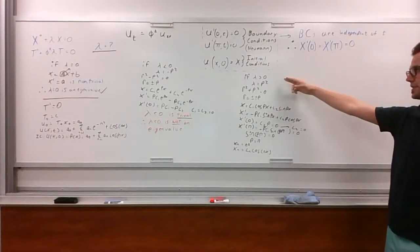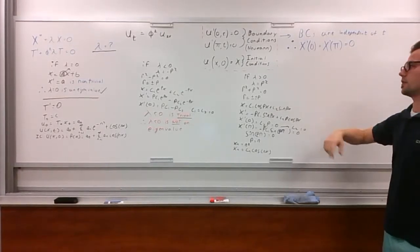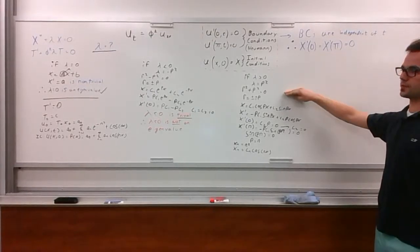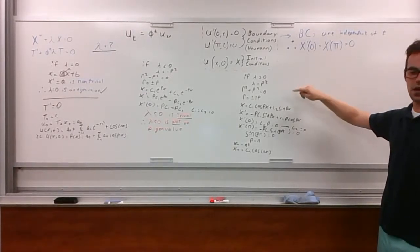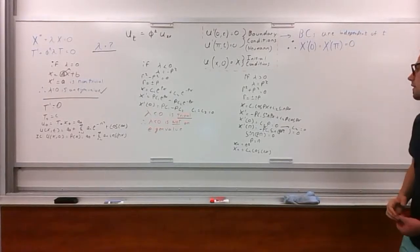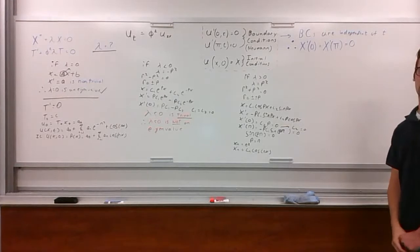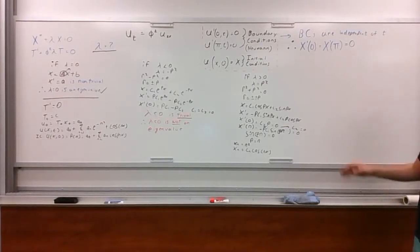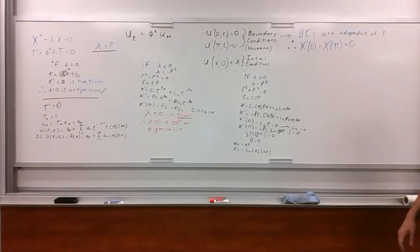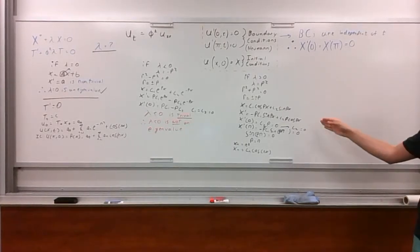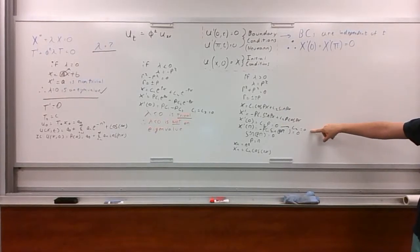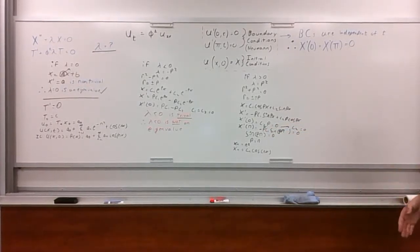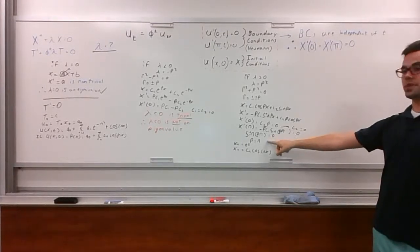Moving on to the third equation, we evaluate whether or not lambda is greater than 0. Making the substitution that lambda equals p squared, we get the characteristic equation r squared plus p squared equals 0. Solving for r, we get r equals plus or minus ip, where i is an imaginary number. Solving for x, we get x equals c1 cos px plus c2 sine px. Taking the first derivative, we get x prime equals minus p c1 sine px plus c2 p cos px. Applying our first boundary condition, we get x prime of 0 equals c2 p, which equals 0, therefore proving that c2 is equal to 0. Applying x prime of pi, we get minus p c1 sine p pi equals 0. Therefore, we know that c1 must not equal 0, so sine p pi must equal 0.